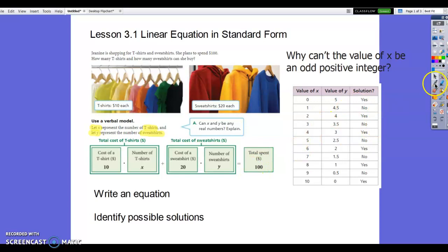It says to write an equation. So if we're going to write an equation, we know that each t-shirt costs $10. And we can call X the number of t-shirts that we're going to purchase. And then we're going to add that to the number of sweatshirts, and those are $20 each. And that is going to equal $100 because that's how much she has to spend. So to write the equation, we're going to have 10X plus 20Y equals 100.